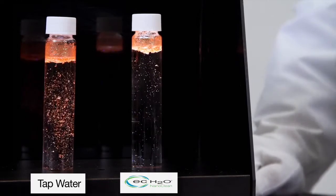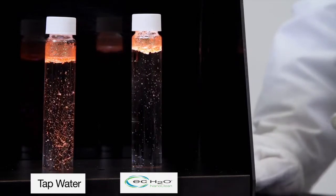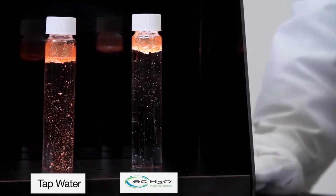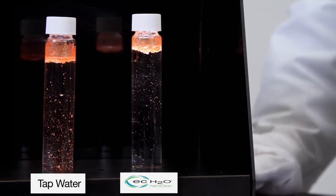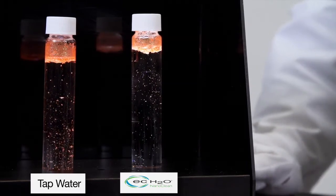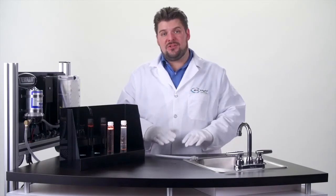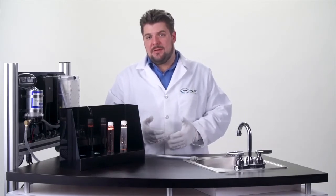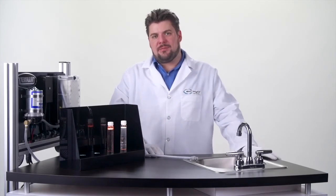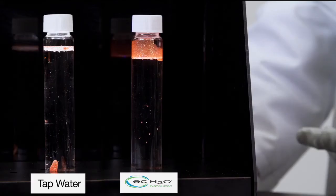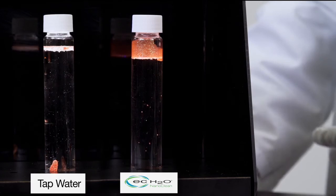You'll see on the tap water side that the general direction of the particulates is down, while on the EC Water Nanoclean side, the general direction of the particulates is going up. If you imagine this were the scrubbing solution underneath the scrubber, the scrubber with the Nanoclean will be much more likely to pick up the soils with the squeegee. But with all this sediment at the bottom of the tap water vial, the squeegee is much more likely to leave soil behind.